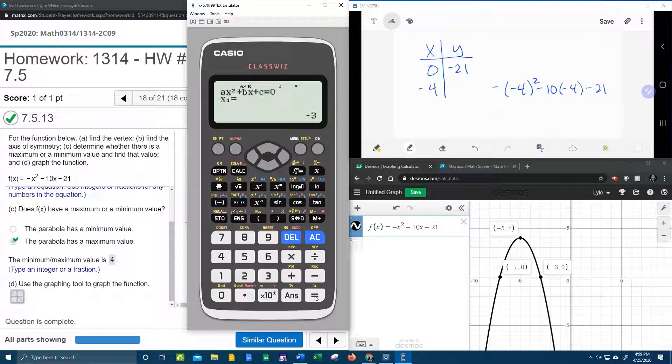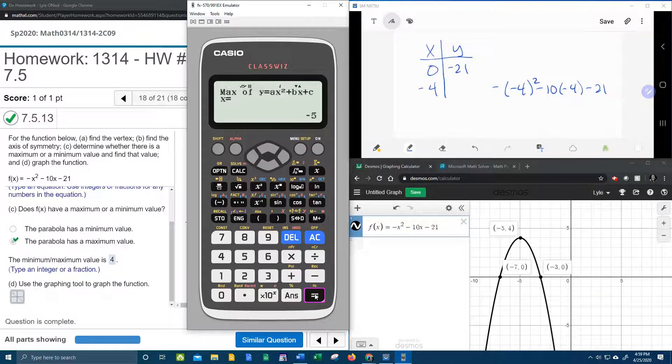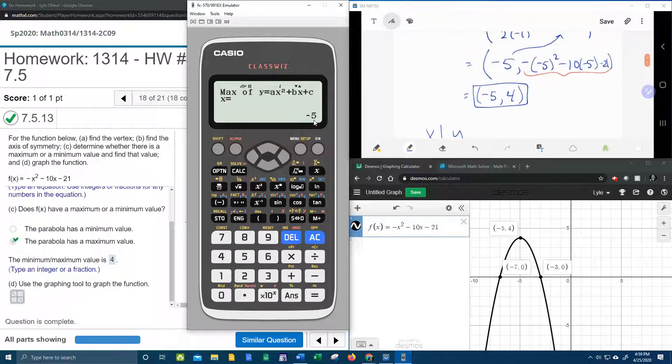Now that's going to tell us our x-intercepts. Notice that that does correspond to the x-intercept over here on Desmos. So negative 3 and negative 7, those are our x-intercepts. But if I hit Equal one more time, it's going to tell me the x-coordinate of the vertex. And that does correspond to what we got. X was negative 5.